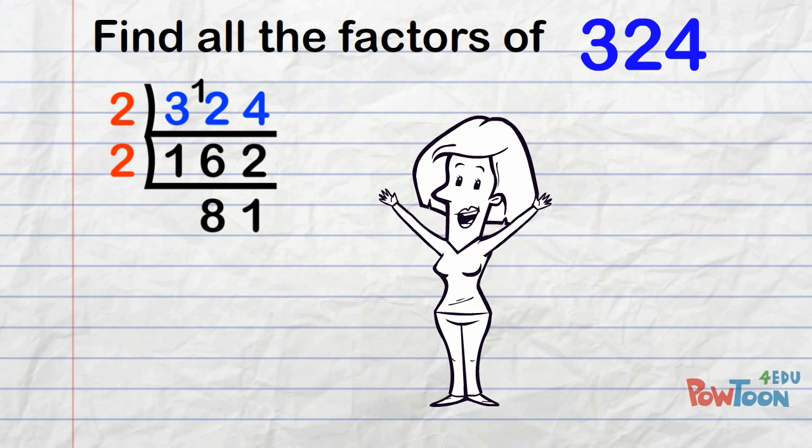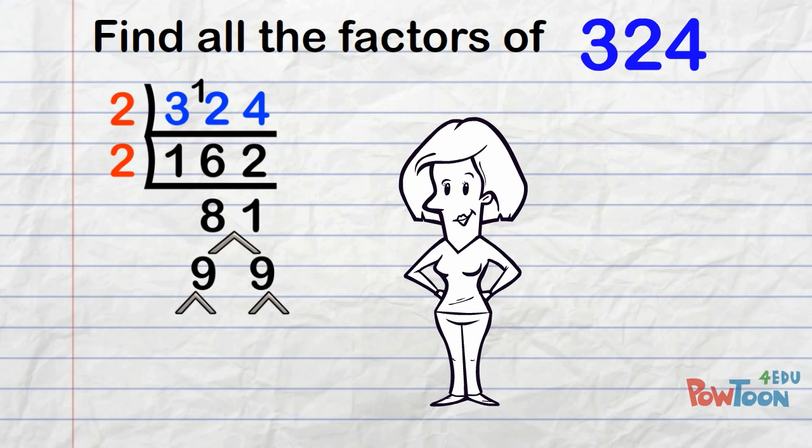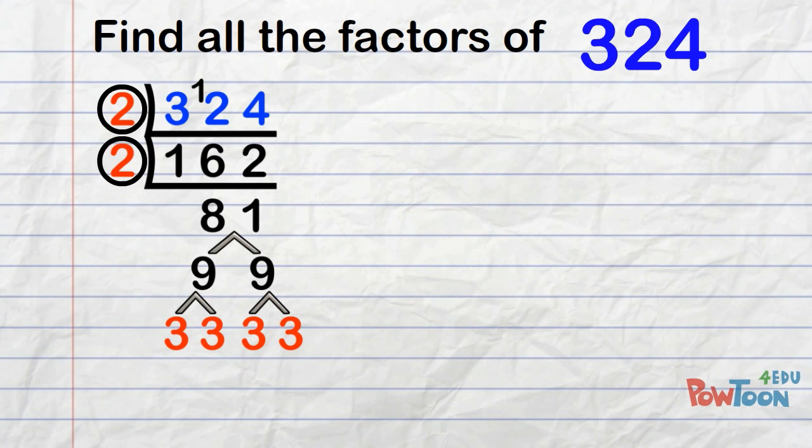Great! 81 is from 9 times 9. 9 is from 3 times 3. 324 gives us repeating prime factors.